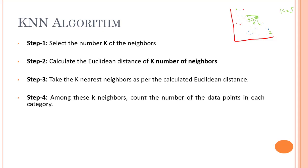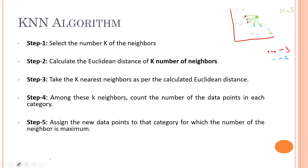Next, among these K neighbors, we count the number of data points in each category. We have three red points and two blue points. Now that I've counted the red and blue points, the new data point belongs to the category for which the number of neighbors is maximum — which is the red category.